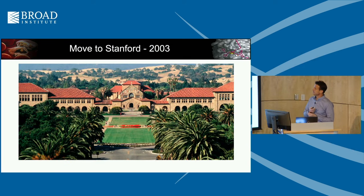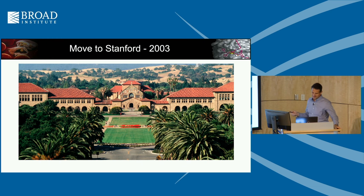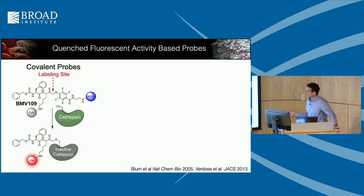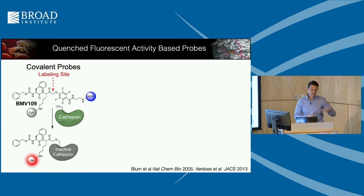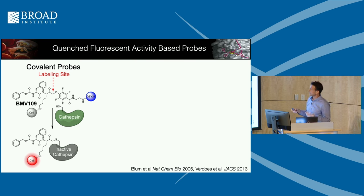I moved to Stanford in 2003 and have been there since in the same lab for the last 20 years. We started thinking about these covalent modifiers and the fact that if you have a fluorophore on your covalent modifier, you still have to wait for it to find its target and for unbound probe to circulate out before you get any contrast for imaging. So we wanted to ask: could we make molecules that are quenched fluorescently?